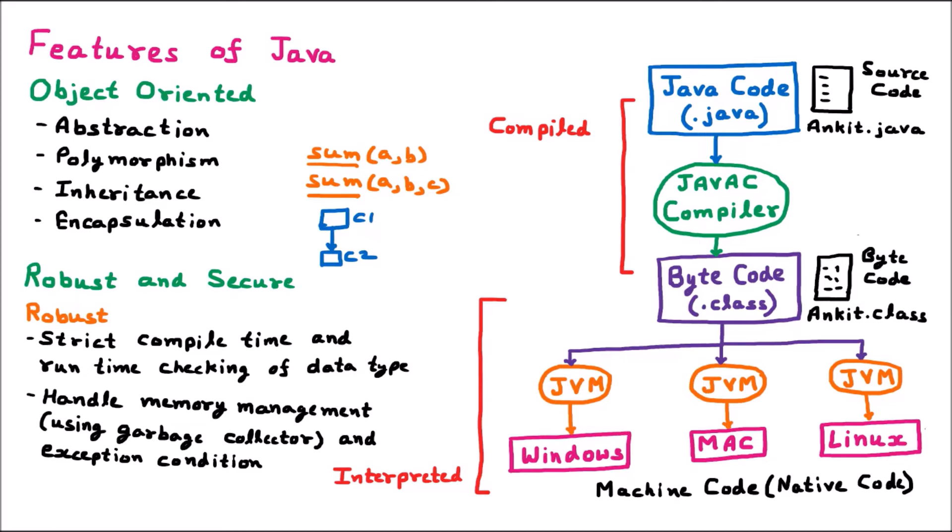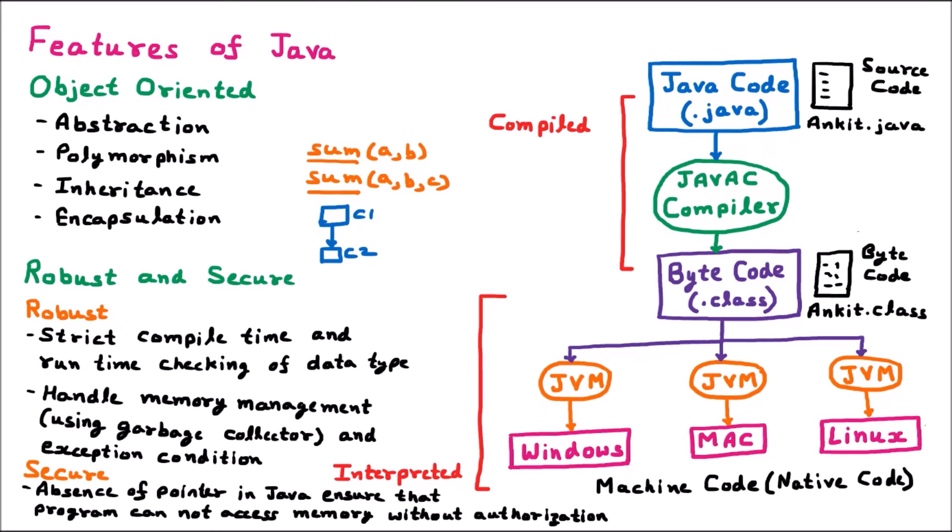Java is also secure. In Java, we don't have the concept of pointers. Pointers are used for pointing to memory addresses, but in Java we cannot point to any memory because there are no pointers, which provides proper safety and security. Whenever we provide an application to the user, user data cannot be accessed by that program without permission. Java cannot access memory without authorization. That's why Java is secure.